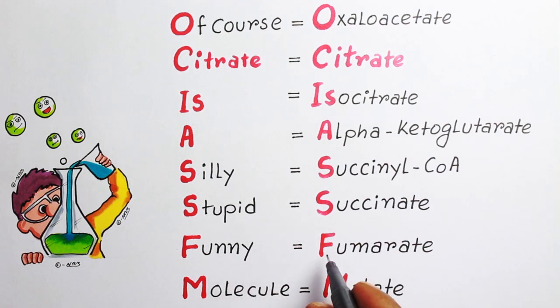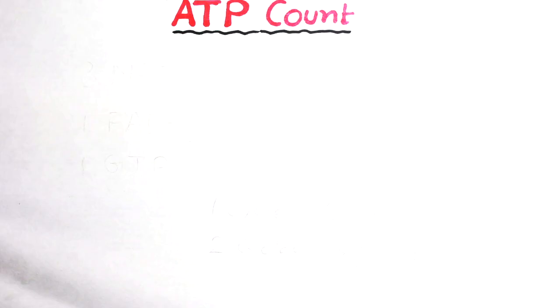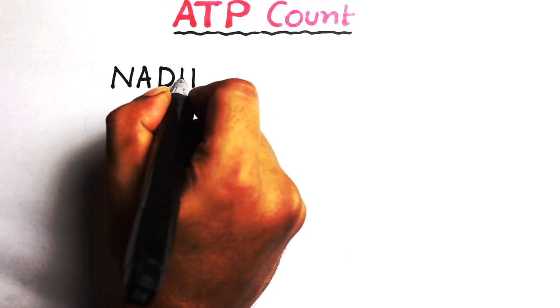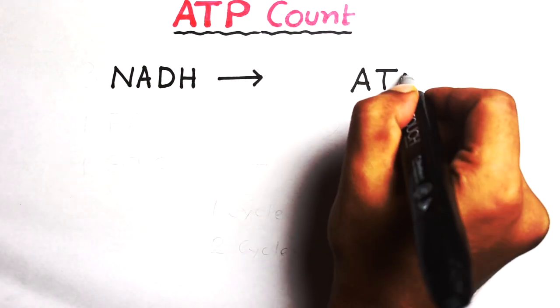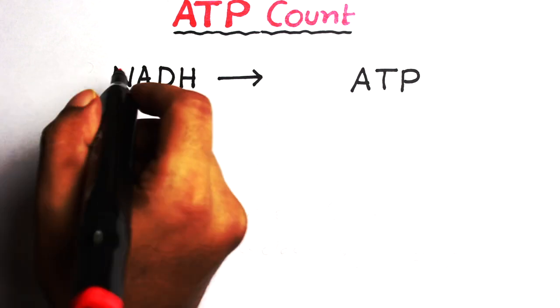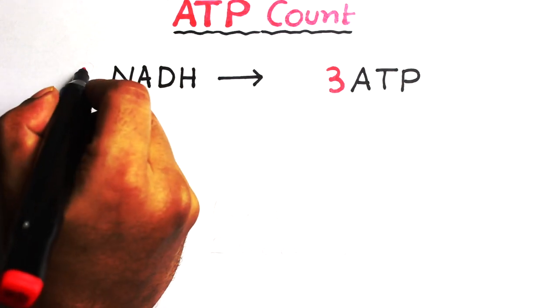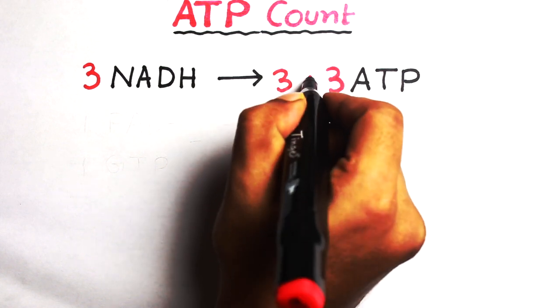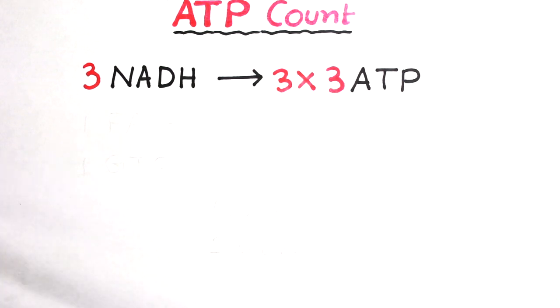Now let's calculate the ATP production. I hope you already know that one NADH molecule can produce three ATP. So how many NADH are produced in one cycle? It's three, so total ATP production is three times three, which is nine.